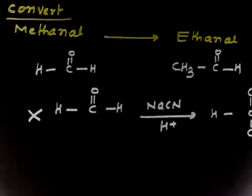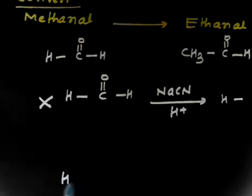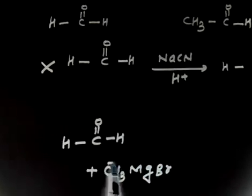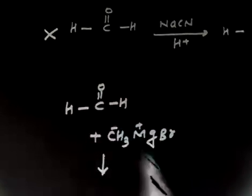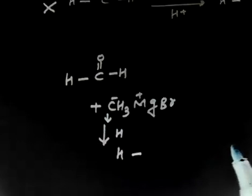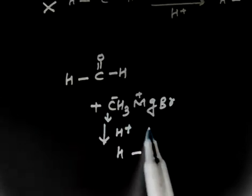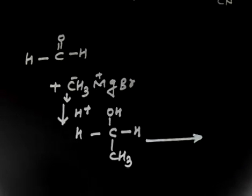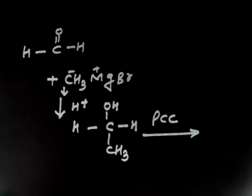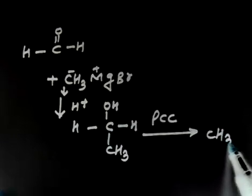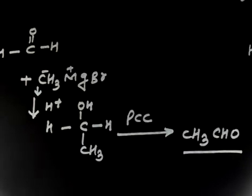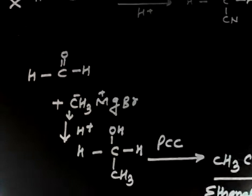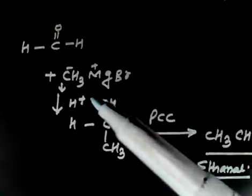To add a carbon, CN⁻ is a good nucleophile, but let us use a Grignard reagent. If I have HCHO and treat it with CH3MgBr, the Grignard reagent will attack here. After attack and hydrolysis with H+, you will have HC(OH)CH3 - an alcohol. You have increased one carbon through the Grignard reaction.